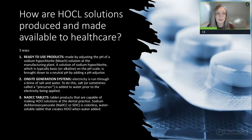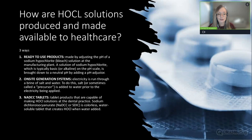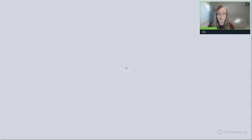How is hypochlorous acid produced and made available in healthcare settings? First, there are ready-to-use products—usually a sodium hypochlorite solution, typically alkaline on the pH scale, brought down to neutral pH by adding a pH adjuster. There are also on-site generation systems, where an electrical current is run through a brine of salt and water. And then there are NADCC tablets that produce a colorless hypochlorous acid solution when added to water.